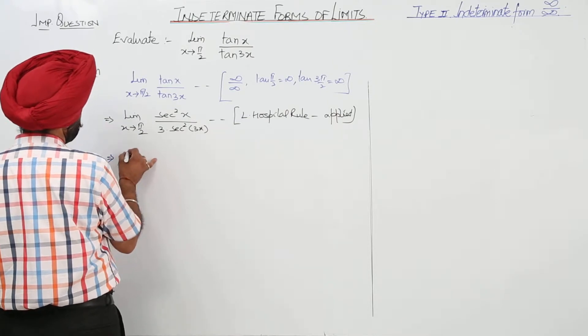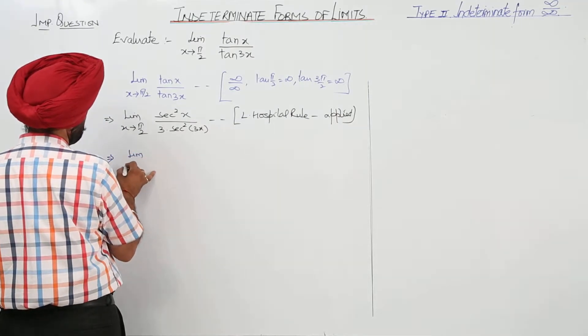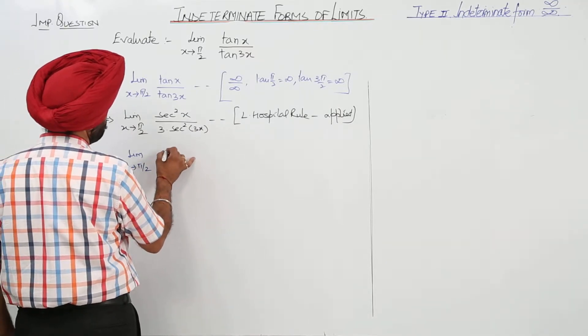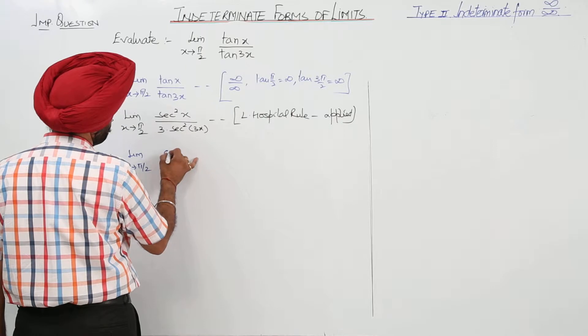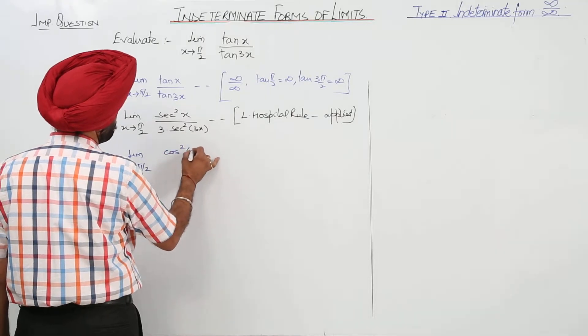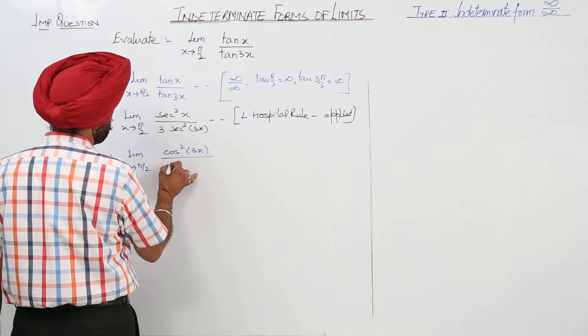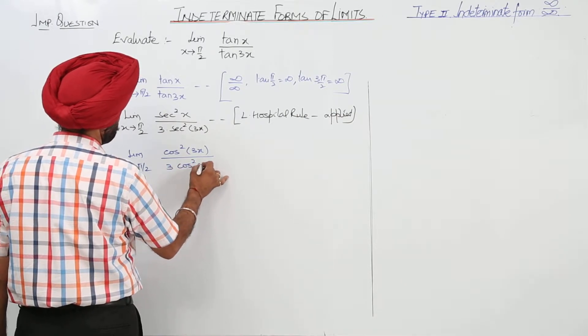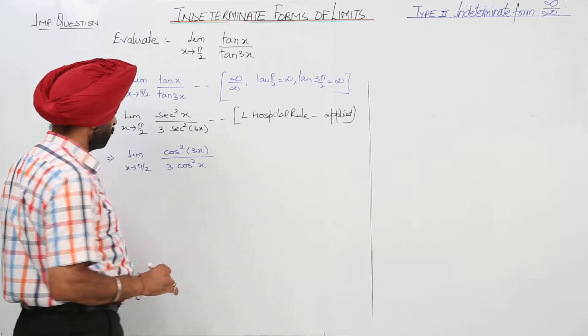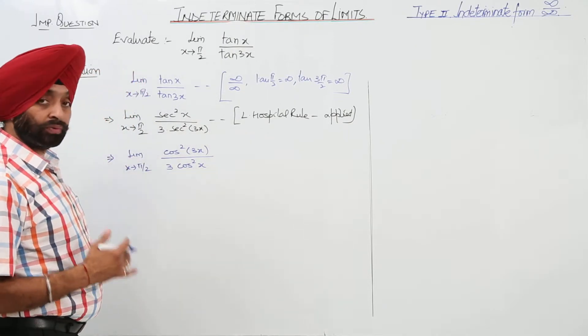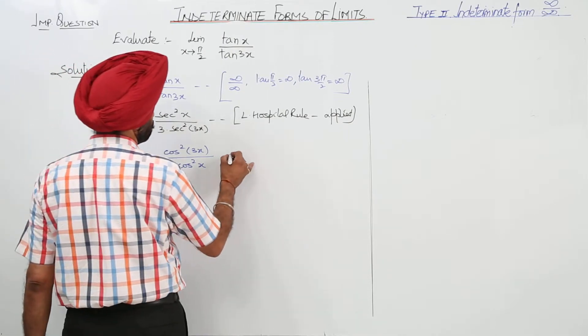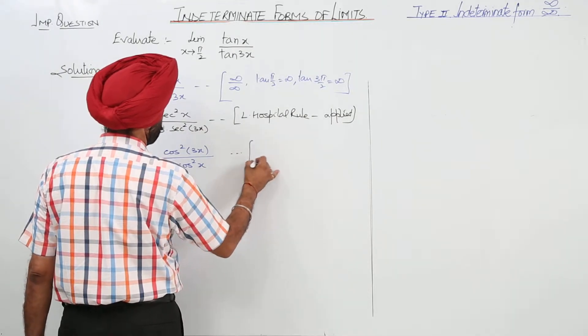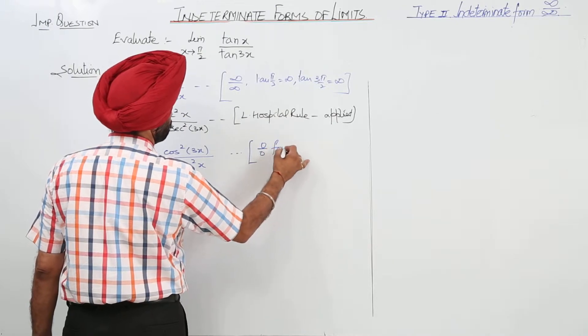Now, what can we write? Limit x approaches π/2: cos²(3x) upon 3cos²(x). Now, in which form does this become? 0 upon 0 form.